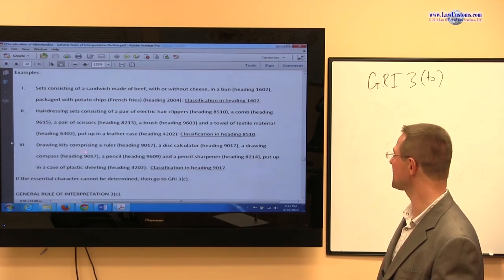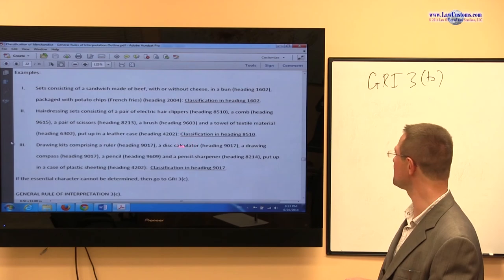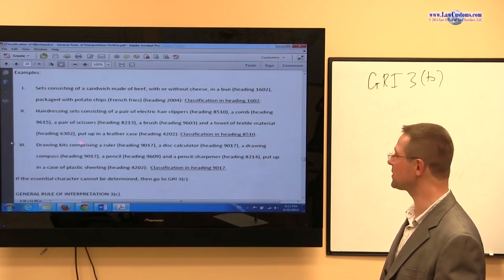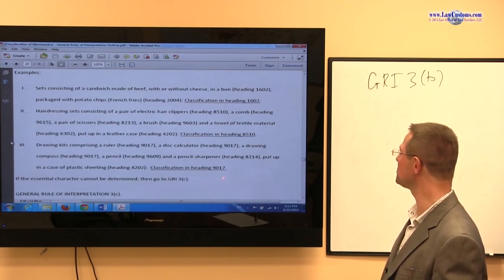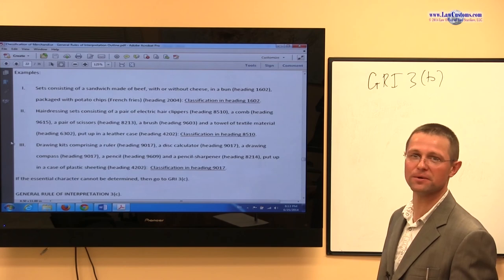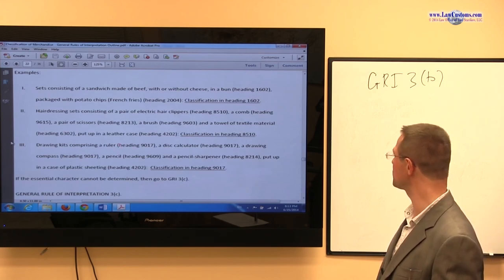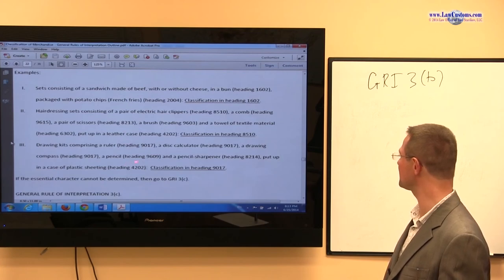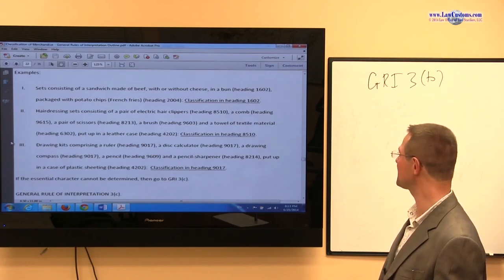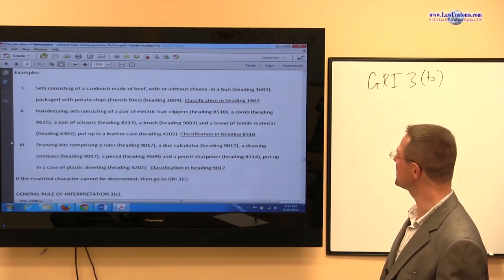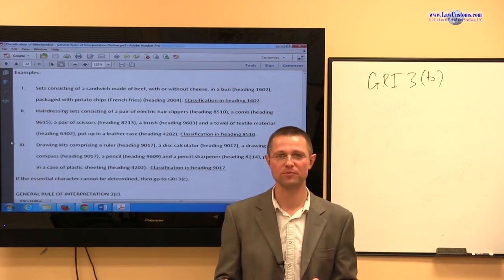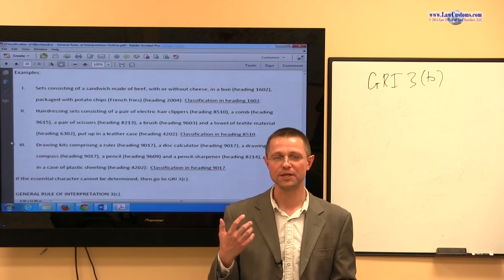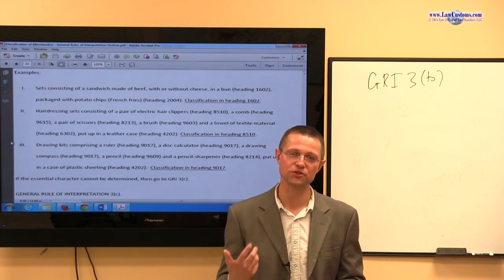Drawing kits. You have a ruler, calculator, compass, pencil, pencil sharpener, all put up together in a plastic case. Here, the classification has been held to be driven by the disc calculator. Not the ruler, not the compass, not the pencil, not the sharpener, but by the calculator. Again, the trend here, as you may see, the most expensive part is the part that drives the essential character of the product.